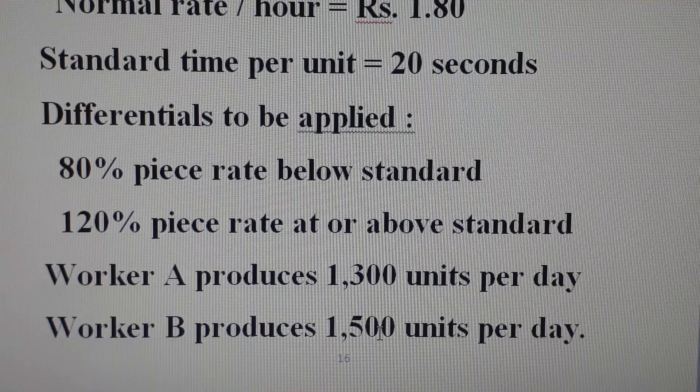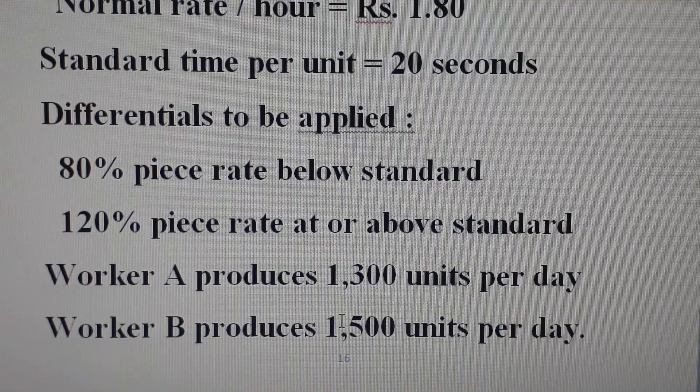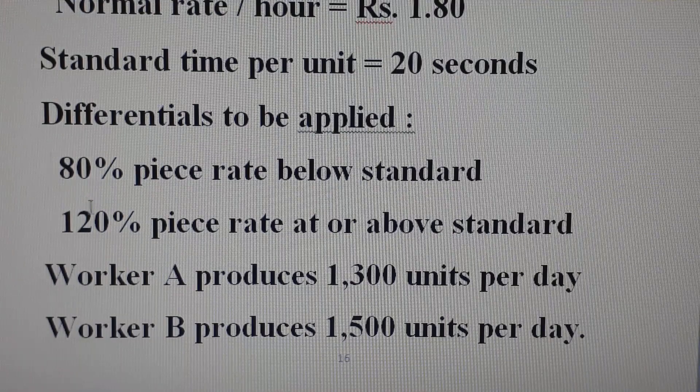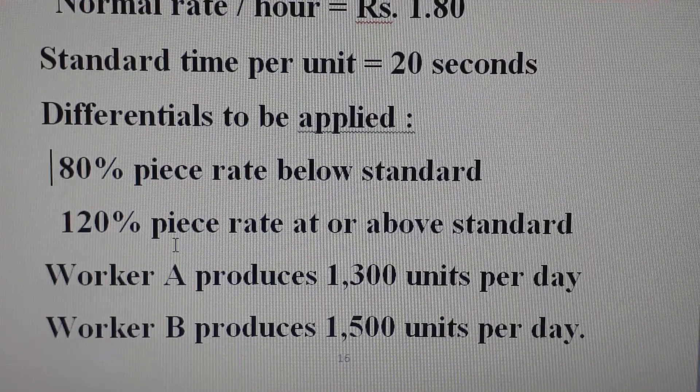Worker A is below standard and Worker B is above standard, because the normal piece rate system applies below standard performance.